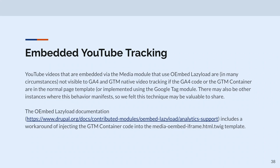Embedded YouTube tracking — this is actually the thing that got me thinking about doing this talk, because I ran into this and said, this is insane, it's really annoying, and I can't believe no one's written something about this. If you're adding embedded YouTube videos and other embedded media via the media module — which is the way you should do this in Drupal — and they use the OEmbed lazy load, in many circumstances this embedded media is not visible to either GA4 or GTM code in the appropriate place, so you do not get any of your enhanced measurement video engagement events the way it's default configured.